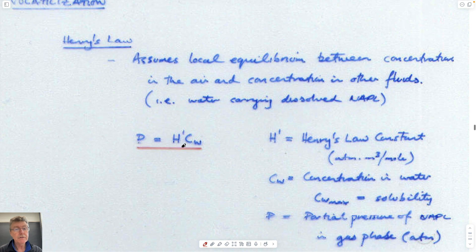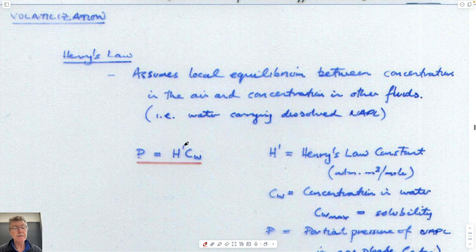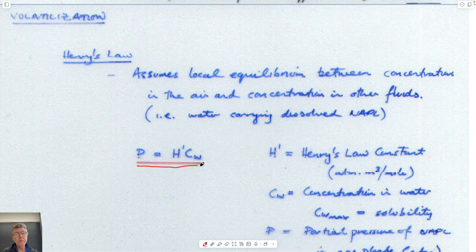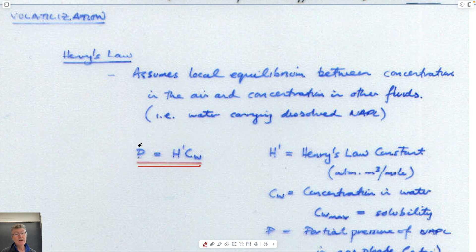If we're dealing with partitioning and sorption, we can use similar equations as before. Henry's law defines how dissolved components in water are partitioned and are in equilibrium with their vapor pressure above the water. The Henry's law coefficient defines the ratio of the concentration in the gas phase to the concentration in the water phase. The concentration in the gas phase is often defined by a partial pressure of that component.